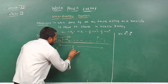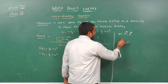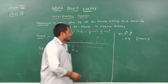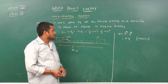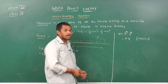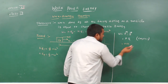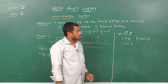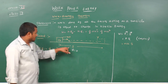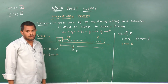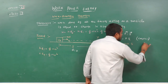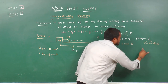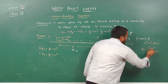The angle between force and displacement is 0, so work equals F·s·cos0, and cos0 equals 1, so work = F·s. According to Newton's second law, force equals mass times acceleration (when mass is constant), so work = m·a·s. To find acceleration, we use the third equation of motion: v² − u² = 2as, giving acceleration = (v² − u²) / 2s.